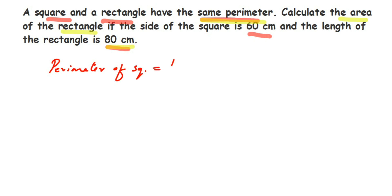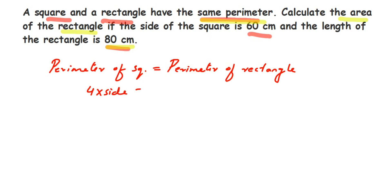Now I'm going to substitute the formulas. The perimeter of a square is 4 × side, and the perimeter of a rectangle is 2(l + b), or equivalently 2l + 2b. I'm going to expand it as 2l + 2b instead of 2(l + b).